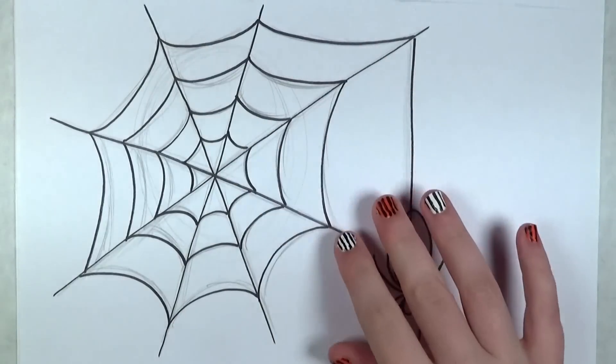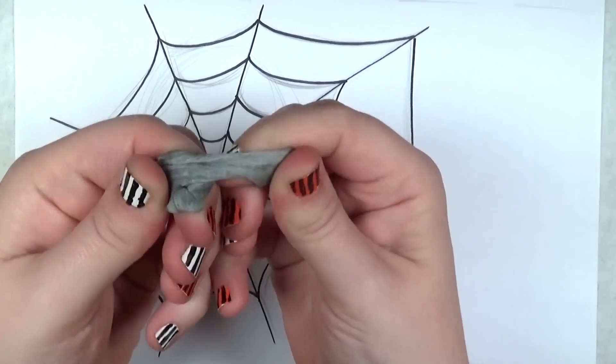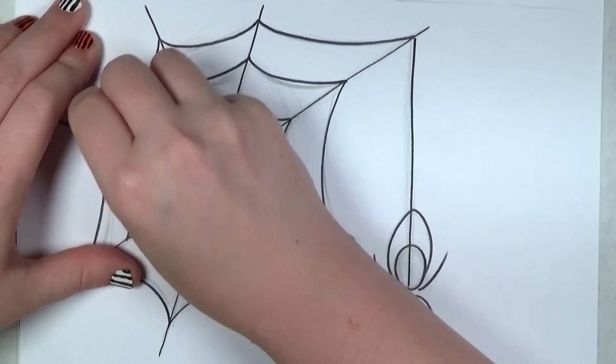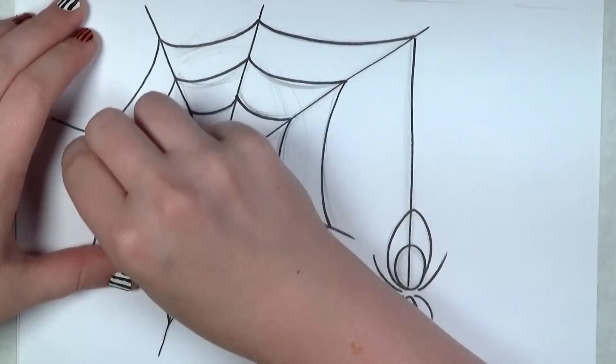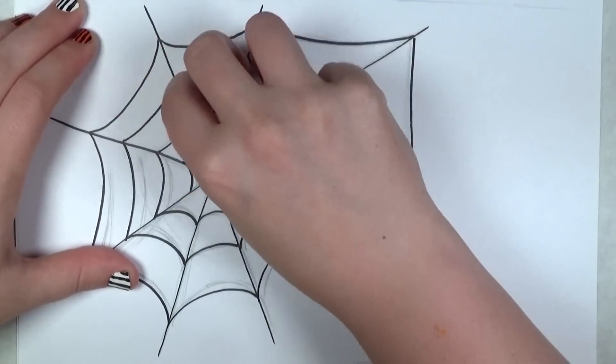Okay, all done with the sharpie marker, at least for outlining. Now it's time to erase. I've got my trusty kneaded eraser. Gosh, don't you know it.